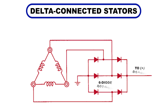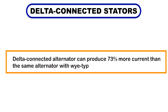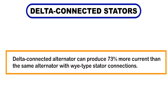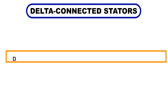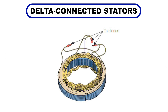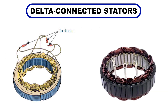This means more current can flow through the alternator compared to the series circuit of a Y winding. In fact, a delta winding can produce up to 73% more current at high alternator speeds. For example, if a Y-connected alternator produces 55 amps, the same alternator with delta windings can produce 95 amps under the same conditions. However, delta windings perform poorly at low engine speeds, making them better suited for applications requiring high output at higher RPMs.